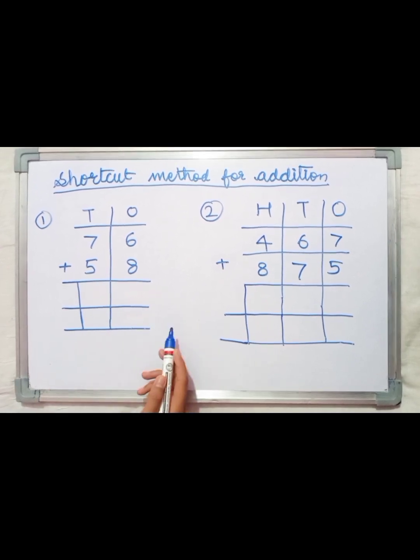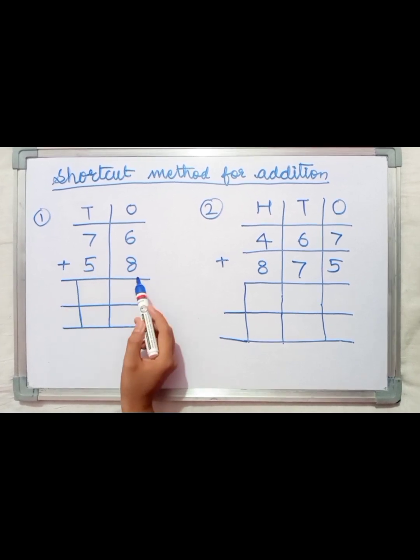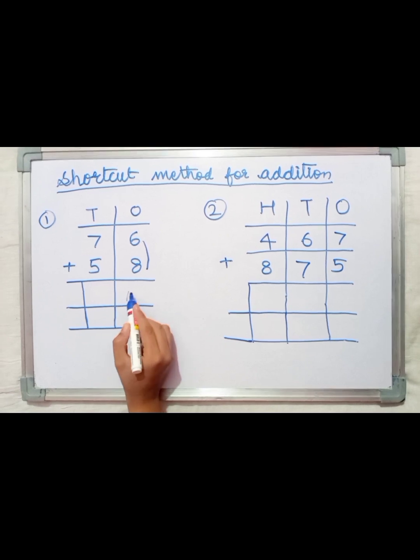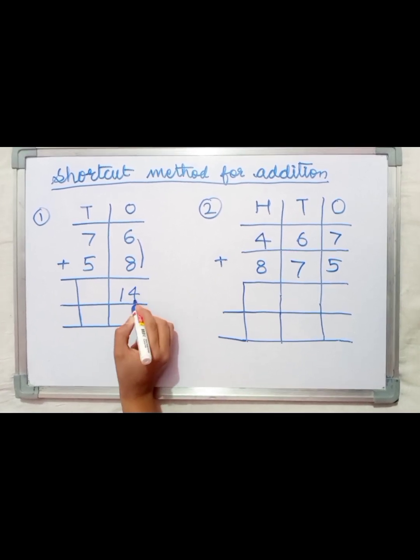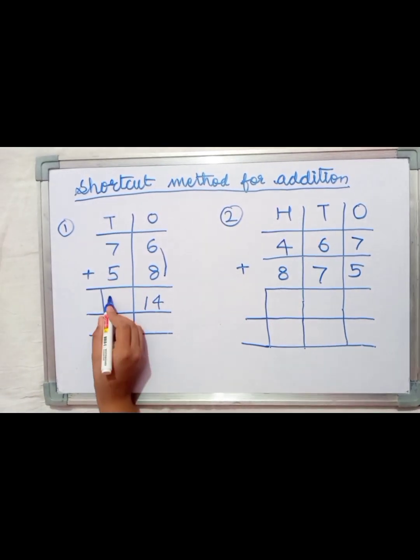First, we'll take an example of a two-digit number: 76 plus 58. First, add 6 and 8, which equals 14. Then add 7 and 5, which equals 12.